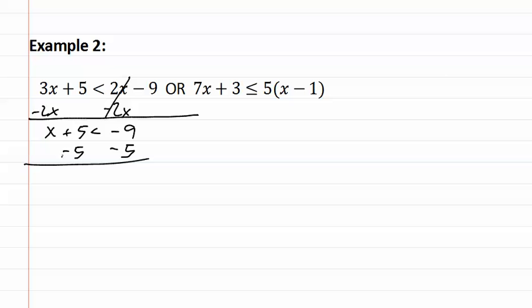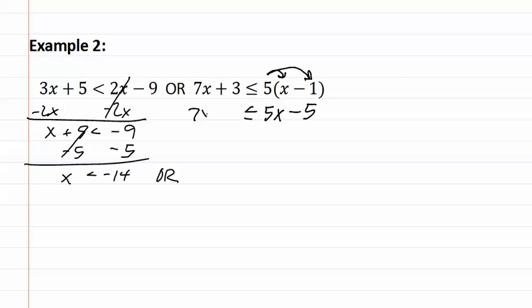Subtract 5 from both sides gives you x is less than negative fourteen. Or we first must distribute before we can move on any further. So we get 5x minus five and everything else stays the same. We can now subtract 5x from both sides giving us 2x plus three is less than or equal to negative five.